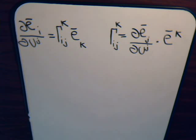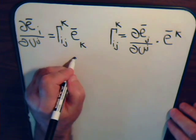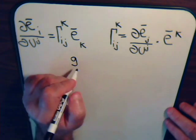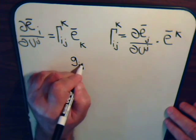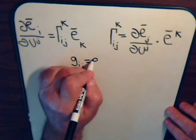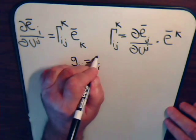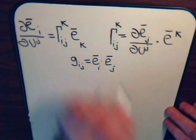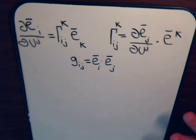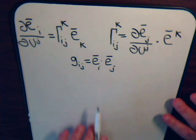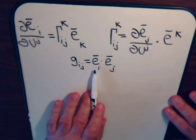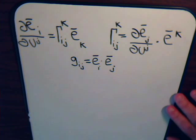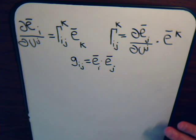In video 12, we had defined the metric tensor, and that is simply the dot product of two tangential vectors — the vectors that are tangent to a particular curvilinear coordinate axis at a particular point in space and time.